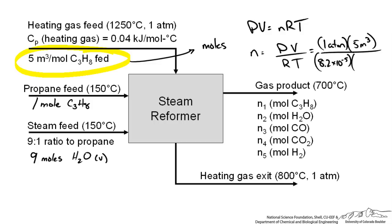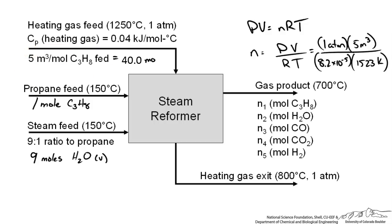we get approximately 40 moles of heating gas entering the steam reformer. Since this gas is not involved in the reaction, 40 moles also exits. Now we have everything in terms of moles and can start setting up our material balances.